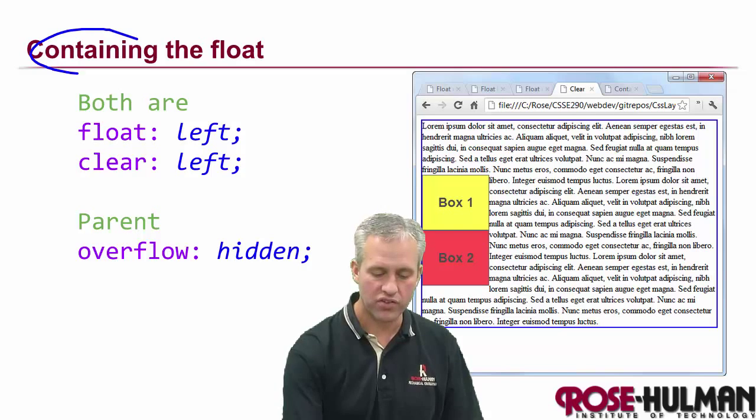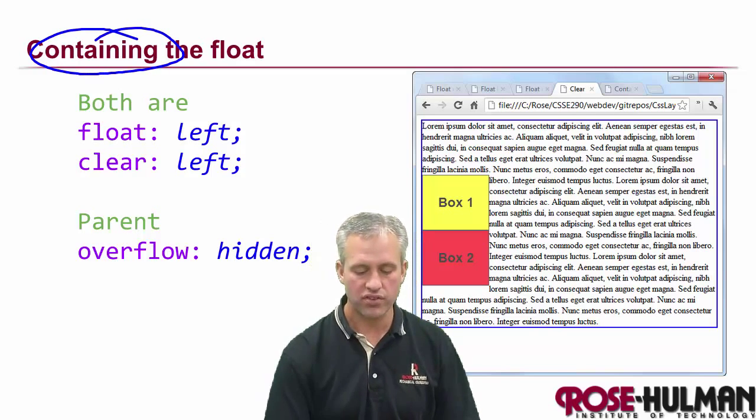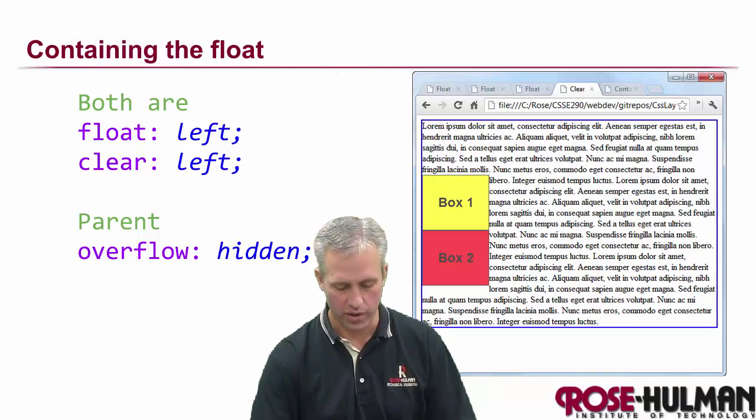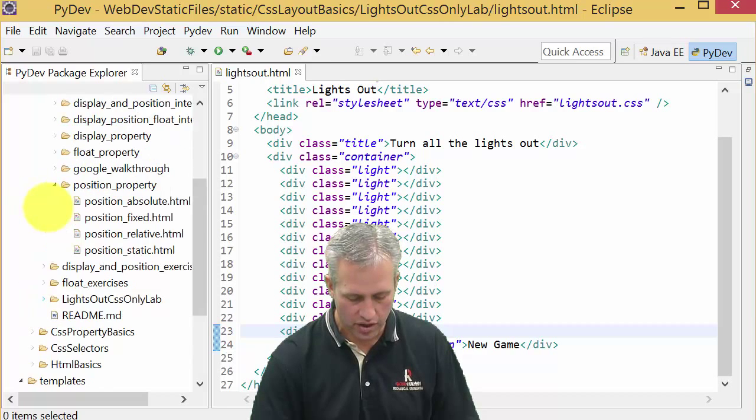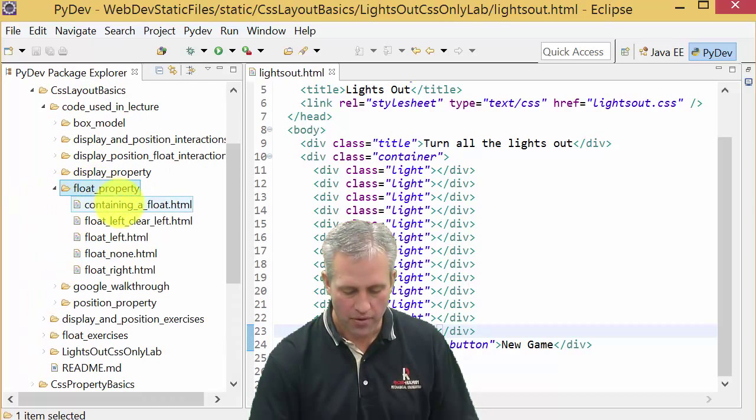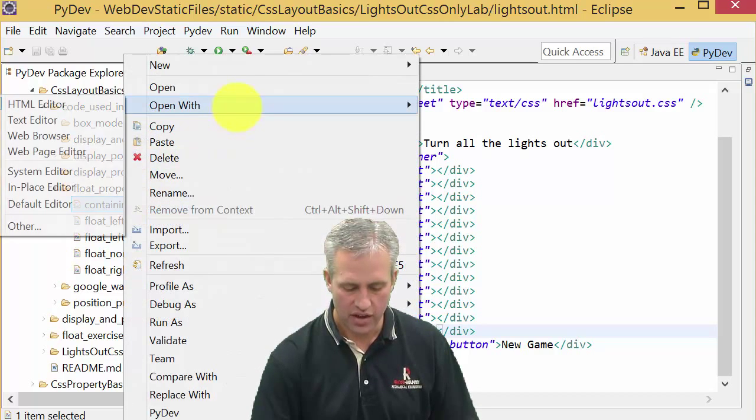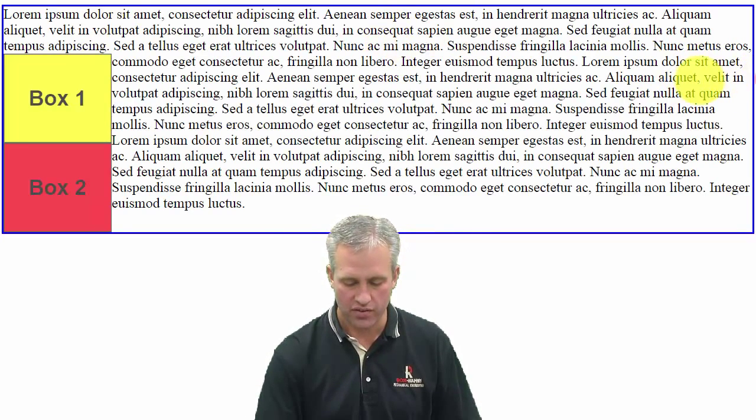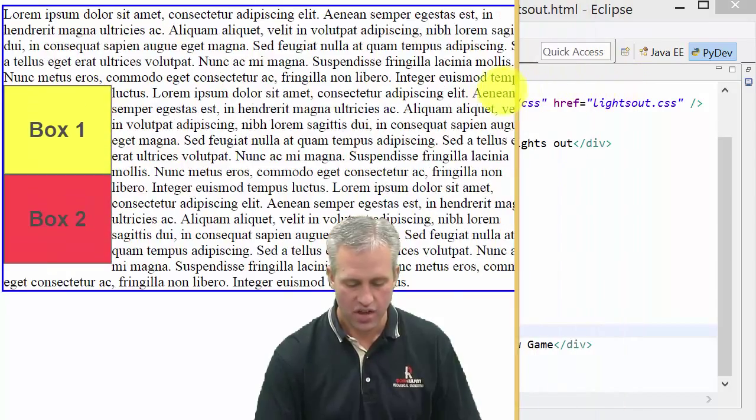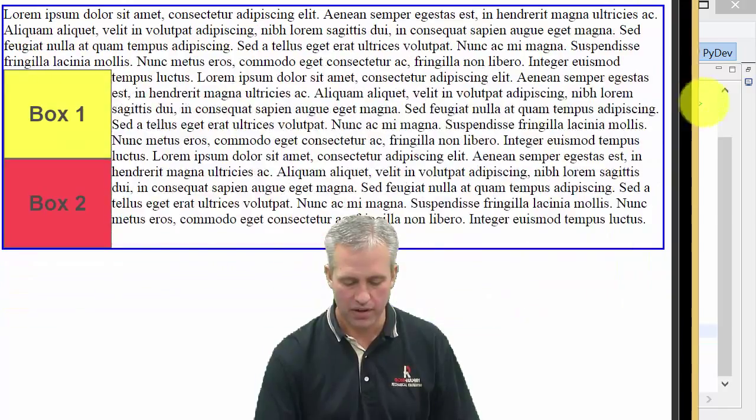Let's talk about one more thing just briefly, and that's containing the float. This example, we're just going to have to go open it to really appreciate what's going on. Go ahead and go into your code used in lecture, find the float property folder, and let's look at containing a float and say open with system editor. This is one we're going to talk about quite a bit, trying to contain things.